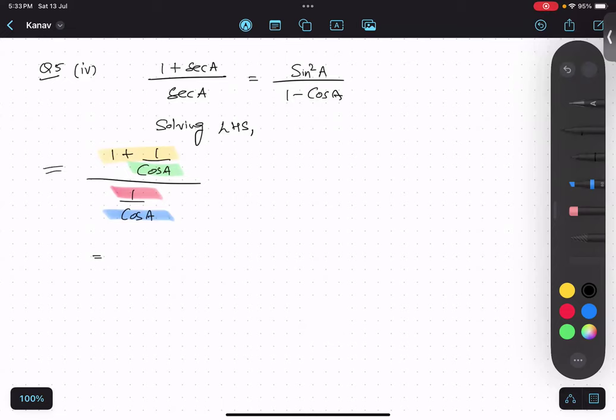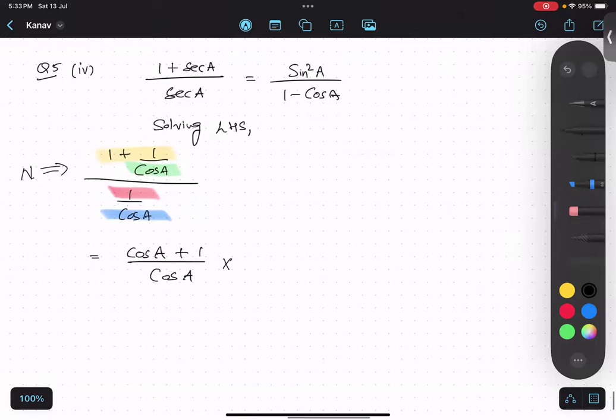So, the numerator part, 1 plus 1 upon cos, I will take LCM. So, it will become cos A plus 1 upon cos A. Make sense? Yes. This is the numerator. Multiply, denominator, cos A upon 1. Is this clear? Yes. So, cos and cos getting cancelled. My answer is cos A plus 1.